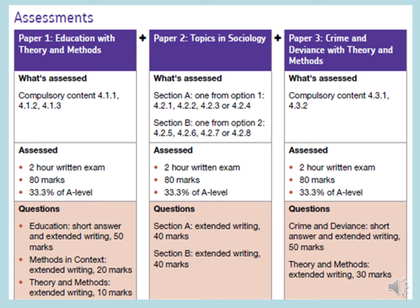Sociology is all exam-based — there is no coursework. It's split into three equal-size exams at the end of the two years. Each exam is two hours long and represents 33.3% of the A-level. It's also split into topics, so each exam covers a different topic that we would have studied.